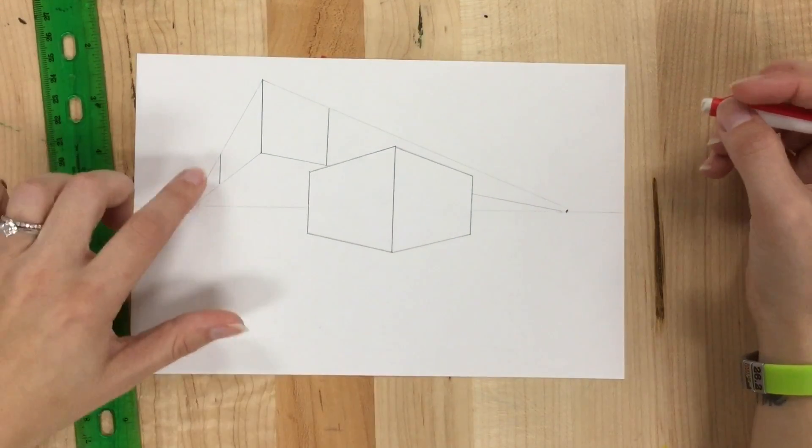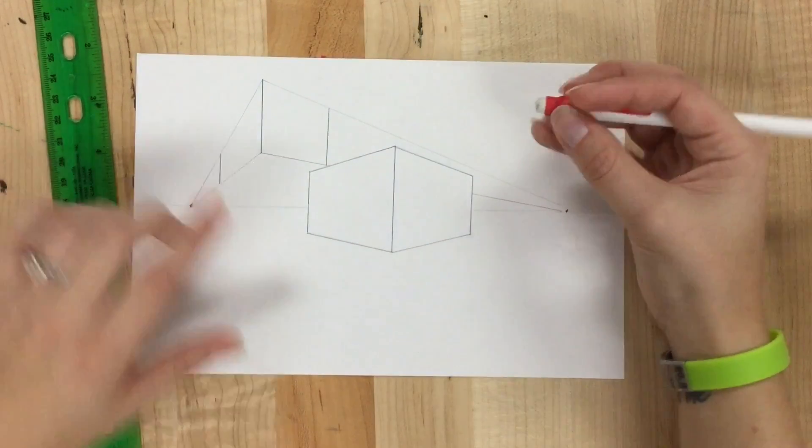Now I'm going to get rid of the lines that I don't need. So anything that extends beyond where my box is.